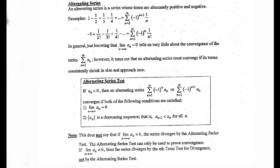In general, just knowing that the limit as n approaches infinity of a sub n equals 0 tells us very little about the convergence of the series. So just because the limit of the sequence goes to 0, we don't necessarily know anything from that. However, alternating series must converge if its terms consistently shrink in size and approach 0.